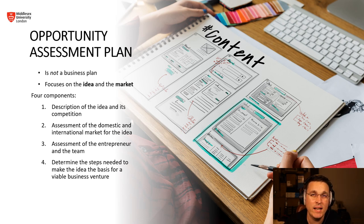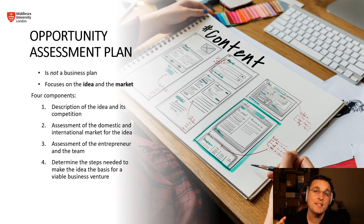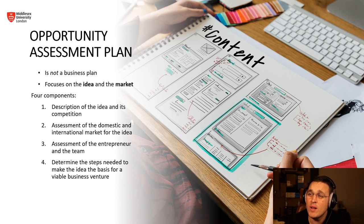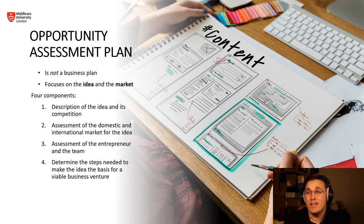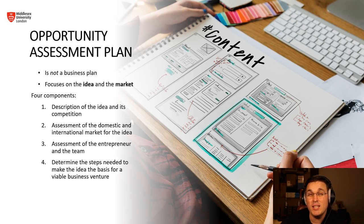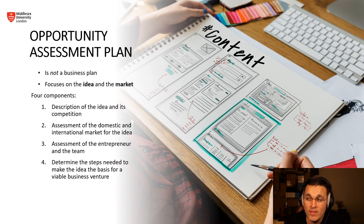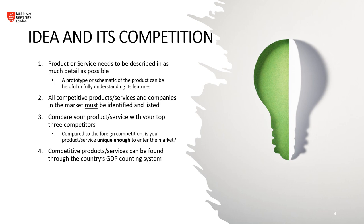Before we jump into what is a business plan and how it's laid out, we should first do an opportunity assessment plan. What we're really looking at here is the idea and the market. Building on this, we have four components: the first being the description of the idea and its competition, leading to the second step which is the assessment of the domestic and international market for the idea. In the first two steps, is the idea good? Does it fit? A lot of good ideas are out there but don't necessarily fit the marketplace.